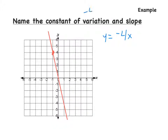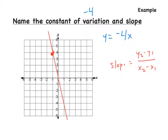Now I want to figure out what the slope is. Remember from previously, when we find slope, that's equal to y2 minus y1 over x2 minus x1. We are only given one point: (negative 1, 4). But we need two points. Remember, in a direct variation, the line always goes through (0, 0) — the origin — so that's always going to be our second point.